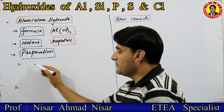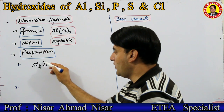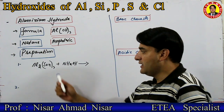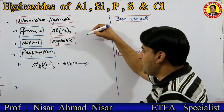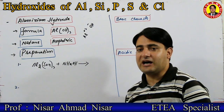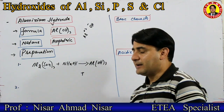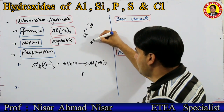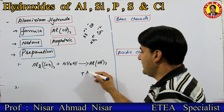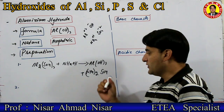Reaction اس طرح ہوگی — میرے پاس aluminium کا salt aluminium sulfate Al₂(SO₄)₃ ہے۔ اس میں aluminium hydroxide NH₄OH add کروں گا — double displacement reaction ہوگا۔ Aluminium ملے گا hydroxyl کے ساتھ۔ Aluminium کی valency plus 3 ہوتی ہے، hydroxyl کی valency minus 1 ہوتی ہے تو Al(OH)₃ بنے گا۔ Sulfate ملے گا ammonium سے — ammonium کی valency plus 1، sulfate کی valency minus 2 — تو (NH₄)₂SO₄ بنے گا۔